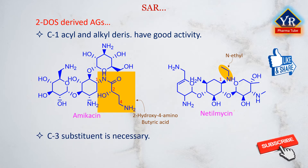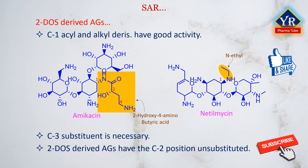The C3 amino substituent is necessary for antibacterial activity and all important aminoglycosides have this moiety. In addition, the 2-deoxystreptamine-derived aminoglycosides necessarily have the C2 position unsubstituted. The C4, C5, and C6 hydroxyl moieties of the aminocyclitol are crucial for activity, and the stereochemistry at these positions is also important. However, few variations at the C4, C5, and C6 positions have been investigated.